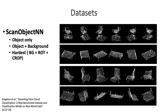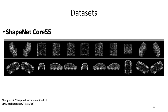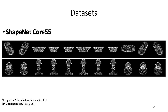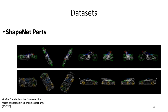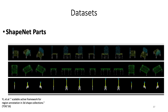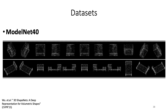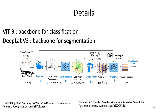Here is a visualization of the datasets we used rendered in our pipeline. ScanObjectNN has 2,900 point clouds with 15 classes consisting of realistic 3D scans. ShapeNet Core55 is used for shape retrieval. ShapeNet Parts is used for segmentation — we show the labels with different colors, and these renderings are used to pre-train the 2D segmenter. ModelNet40 is used for occlusion robustness testing. The backbone used for classification is Vision Transformer Base, and for segmentation we used DeepLab v3.